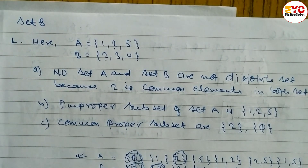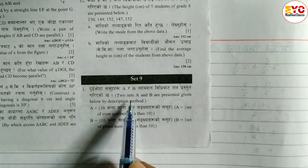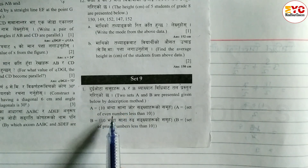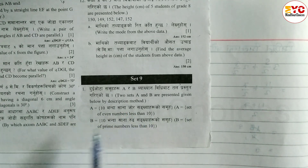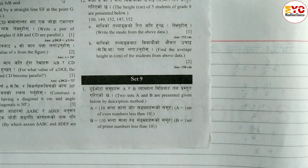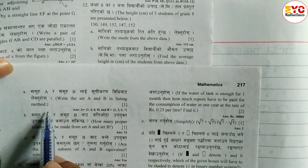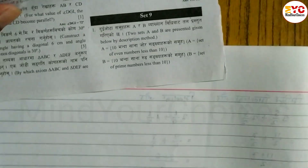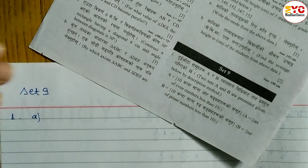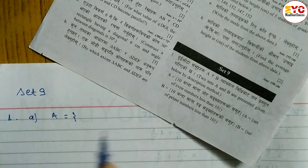Hope you understand question number 1 from set 8. Now look at set 9, question number 1. Two subsets A and B are presented by description method. Question A: set of even numbers less than 10. Question B: set of prime numbers less than 10. Write set A and B in listing method.